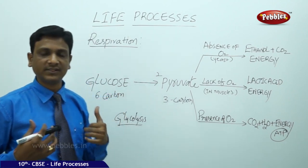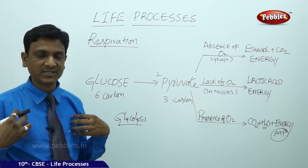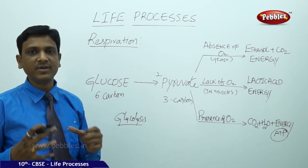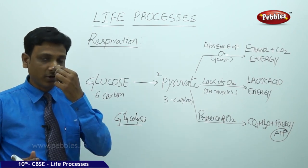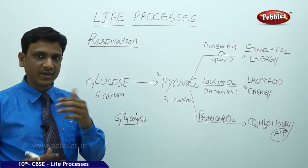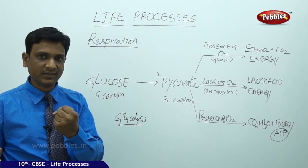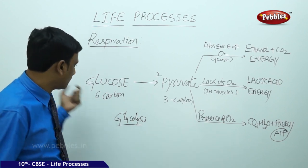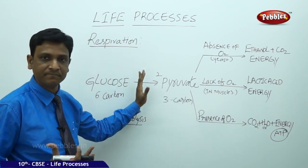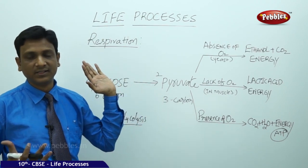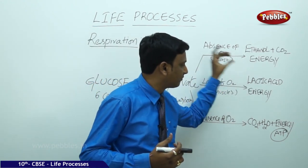Although aerobic respiration is the norm in organisms like humans, sometimes on a temporary basis anaerobic respiration takes place. For example, when you hold your breath while jogging or running, no oxygen is supplied to your cells. The cells are deprived of oxygen, yet energy is required for the muscles. Glucose is still converted to pyruvic acid — the first step doesn't require oxygen — but then pyruvic acid is converted to lactic acid and energy.